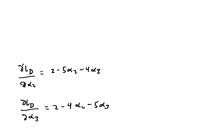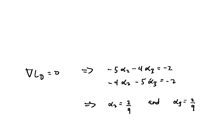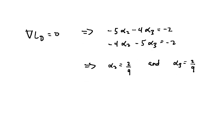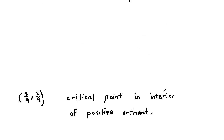Taking the partial derivatives: the partial of L sub d with respect to alpha2 is this, and the partial of L sub d with respect to alpha3 is this. Setting the gradient equal to 0, we get this system of equations. Solving this, we get alpha2 equals 2/9 and alpha3 equals 2/9. So (2/9, 2/9) is a critical point in the interior of the positive orthant.